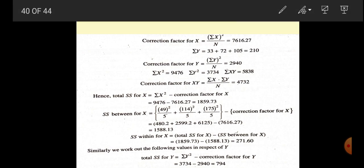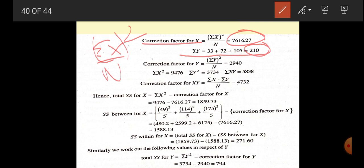Now to find the correction factor for X, the formula is summation of X by N, the whole squared. Summation of Y is 210 and correction factor for Y is 2940. Summation of X square is this, summation of Y square is this, and summation of XY is this. Correction factor for XY can be found with this formula: summation of X times summation of Y by N, which equals 4732.